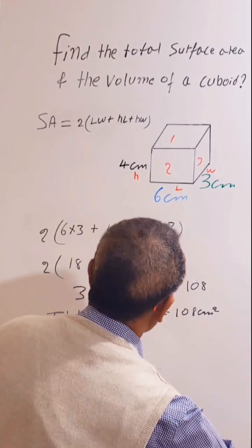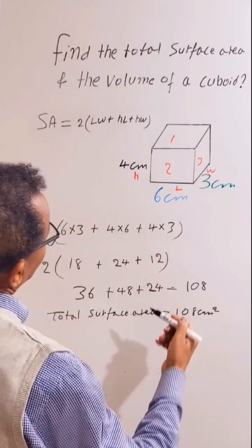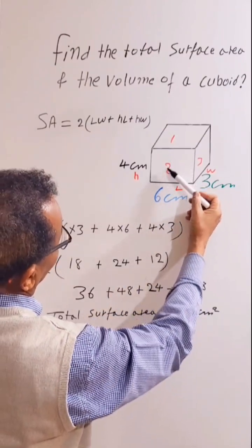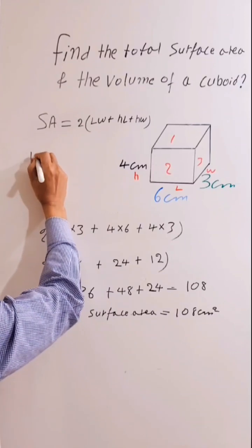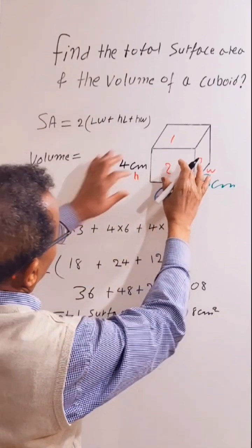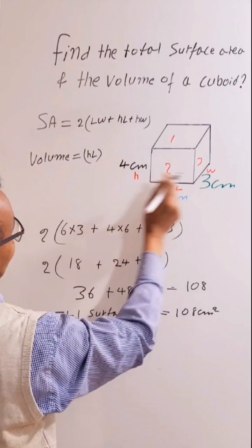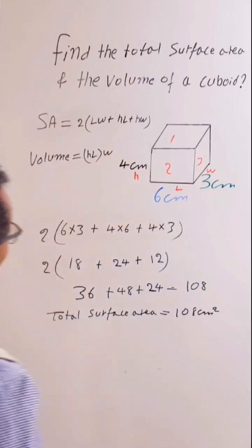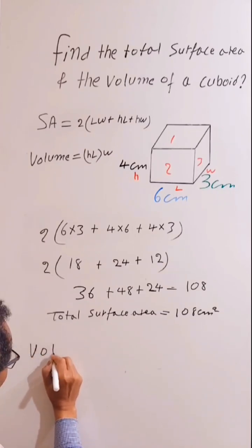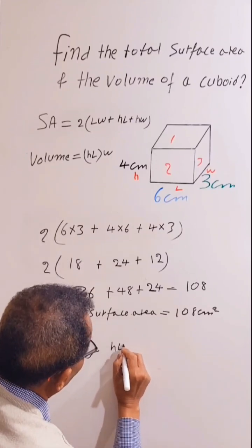So let's find the volume now. To find the volume, first let's find the area of the front rectangle. Volume is equal to the area of this rectangle times the width, so H times L times W.